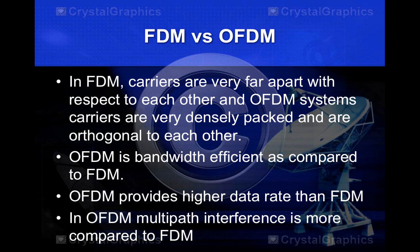Now I'll explain the difference between FDM and OFDM. In FDM, carriers are very far apart from each other, whereas in OFDM systems, carriers are very densely packed and are orthogonal to each other. OFDM is more bandwidth efficient than FDM, provides higher data rates, though multipath interference is greater in OFDM compared to FDM.